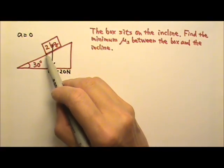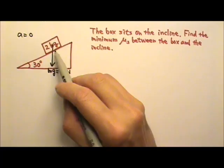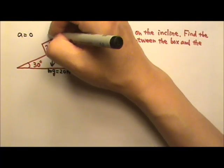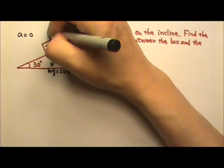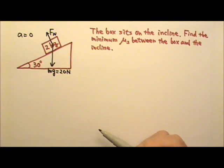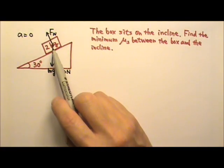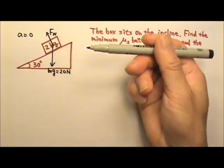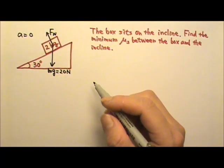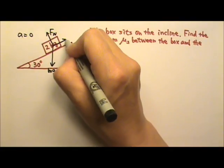The box is touching the incline, so you can have normal force and friction. Normal force goes perpendicular to the incline. The box is not sliding, but it has a tendency to slide down the incline, so there is a static friction going up the incline.